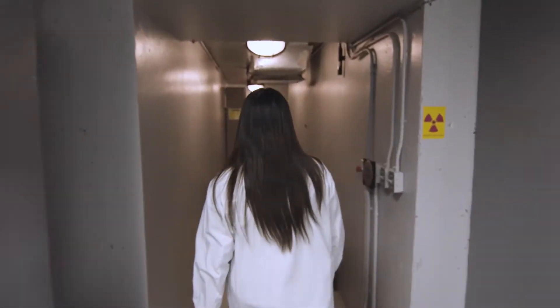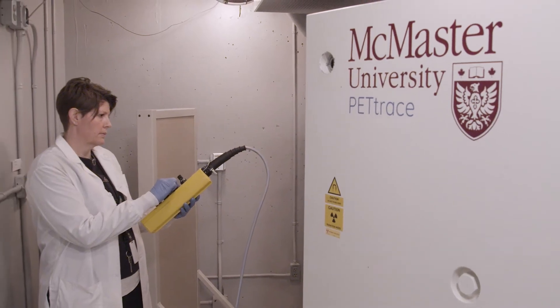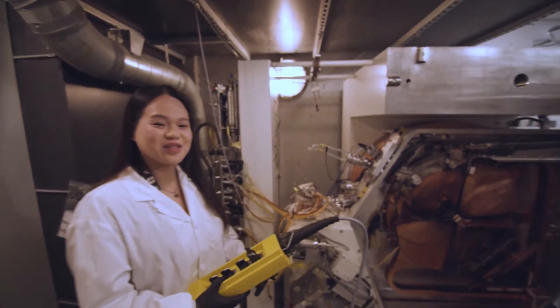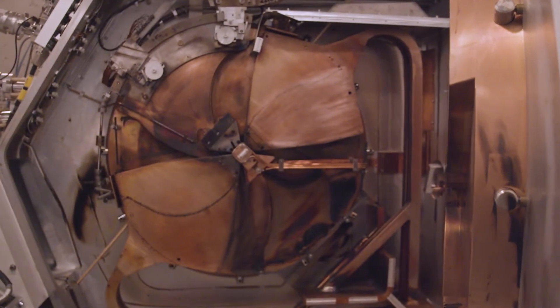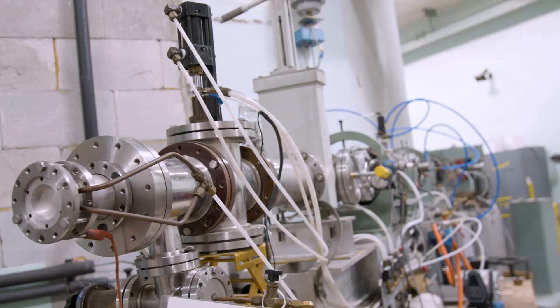The McMaster University cyclotron is complementary to the research reactor in the production of radioisotopes. Our 16.5 MeV GE PET Trace negative ion cyclotron is designed for the production of positron-emitting isotopes.